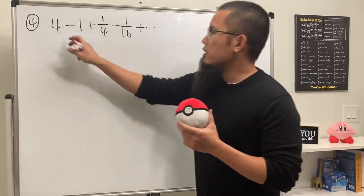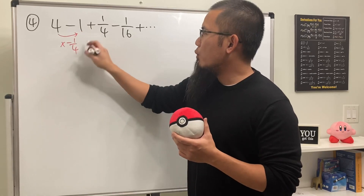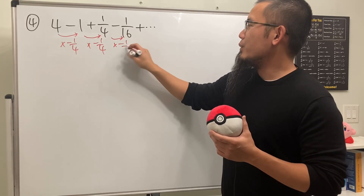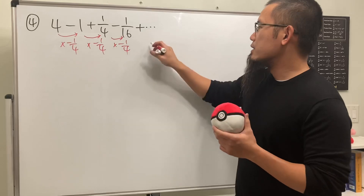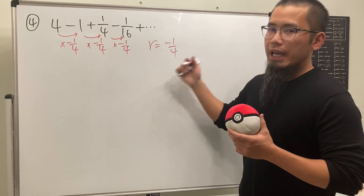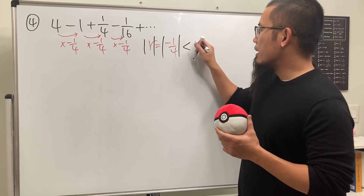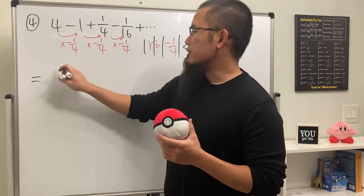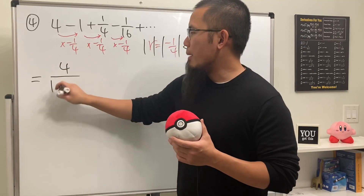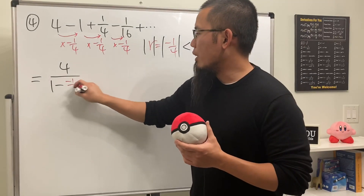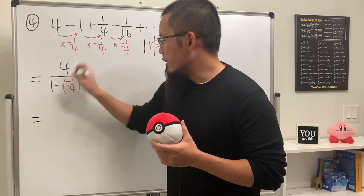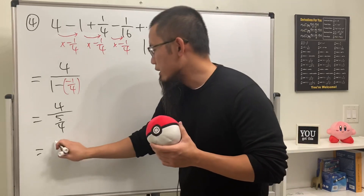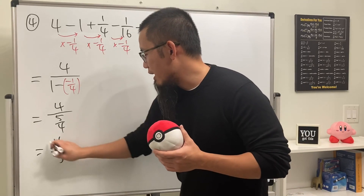For number four, multiplying from term to term we see we must multiply by negative one over four each time, so the common ratio is -1/4. Since |r| < 1, this converges. We just take the first term divided by one minus the common ratio (which is -1/4). Working that out gives 4 over (5/4), and multiplying by the reciprocal gives 16 over 5.